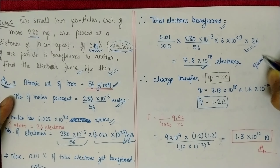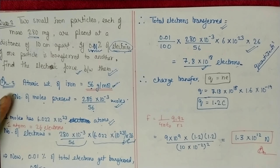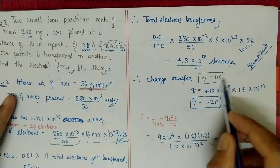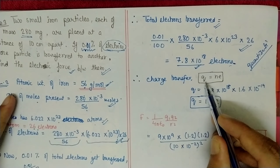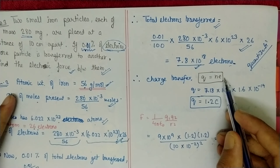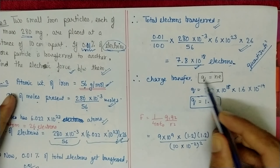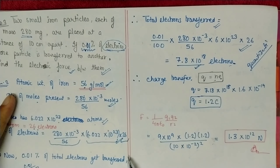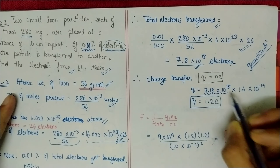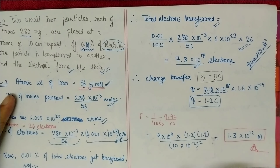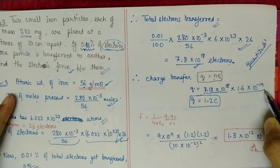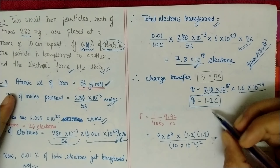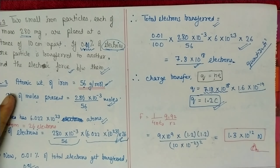This is based on the quantization of charge topic. The formula is q = ne, where q is total charge, n is number of electrons, and e is the charge on one electron. With n = 7.8 × 10¹⁸ and e = 1.6 × 10⁻¹⁹ C, multiplying gives the charge on the species.